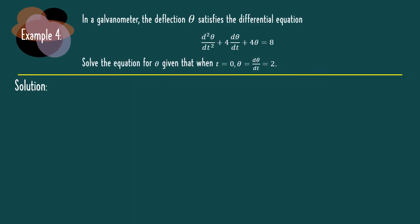For the last example of this topic, let's solve an application problem. In a galvanometer, the deflection theta satisfies the differential equation d squared theta over dt squared plus 4 d theta over dt plus 4 theta equal to 8. This is non-homogeneous since f(t) is not equal to 0 — we have a constant function. We solve for theta given initial conditions: when t equal to 0, theta equal to 2 and d theta over dt equal to 2.